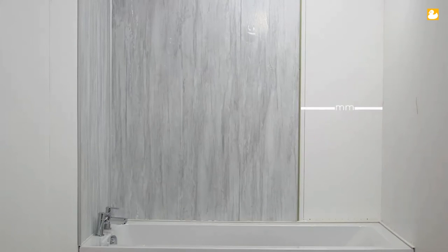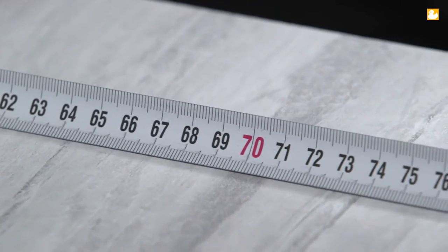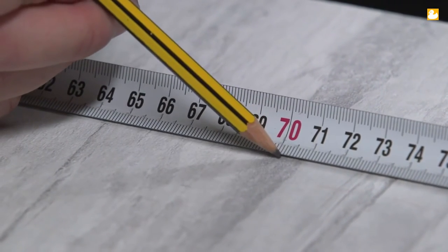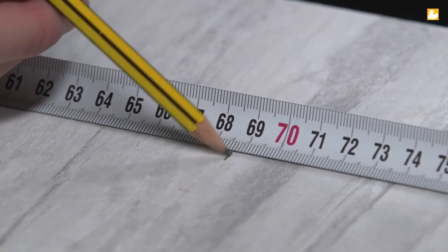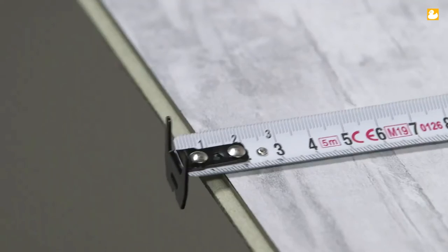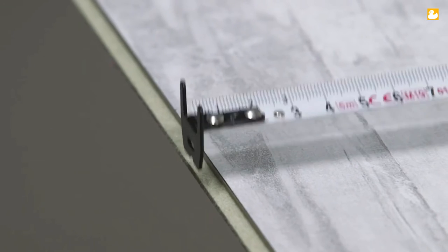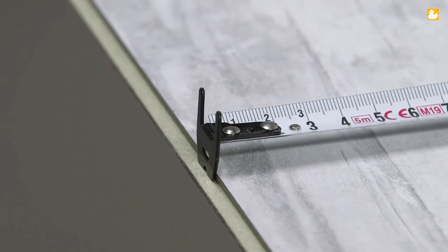For panel 3, measure from the panel edge of panel 2 to the wall, remembering to remove the 15mm for the corner trim. When cutting panel 3, ensure the measurement is taken from the panel edge and not the tong profile.